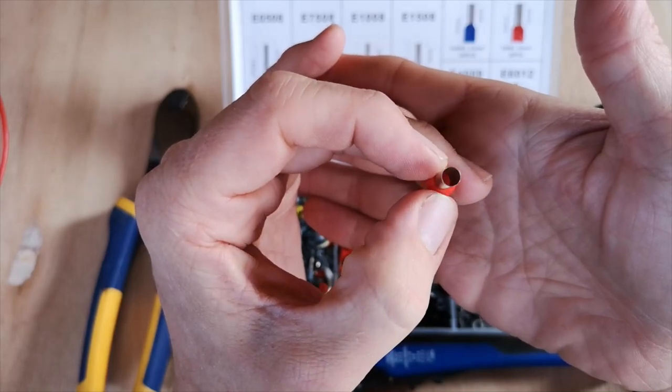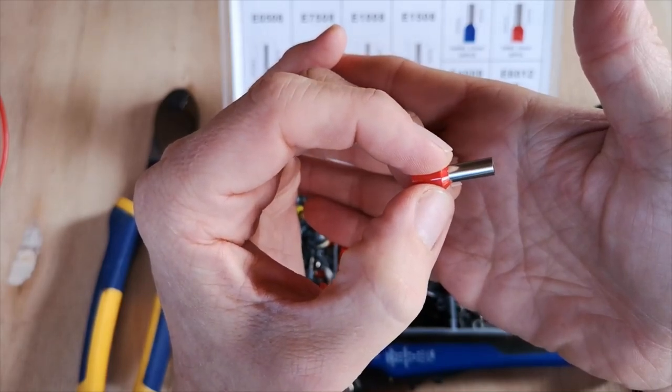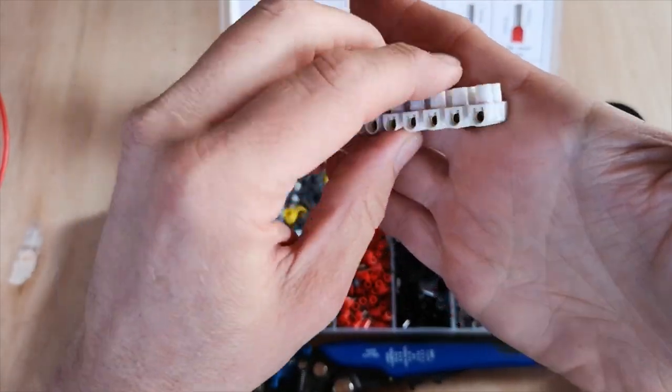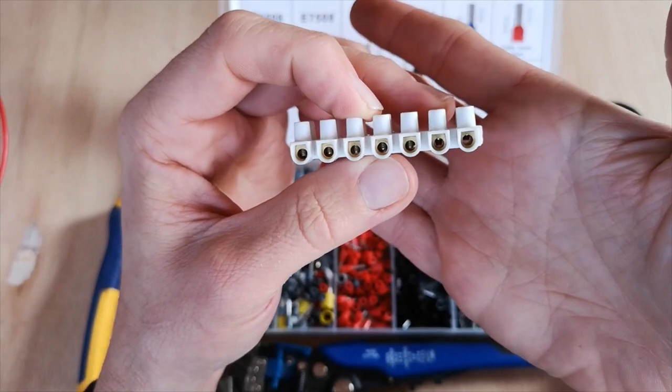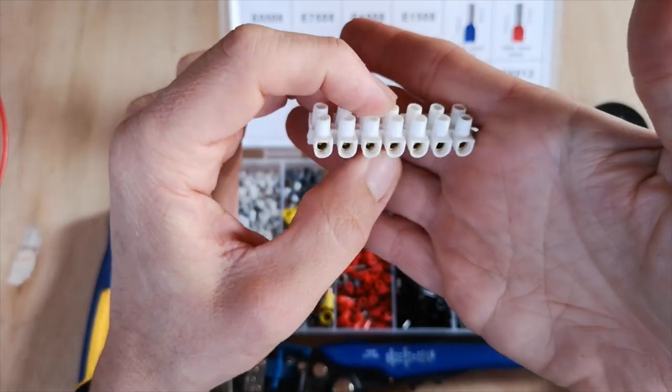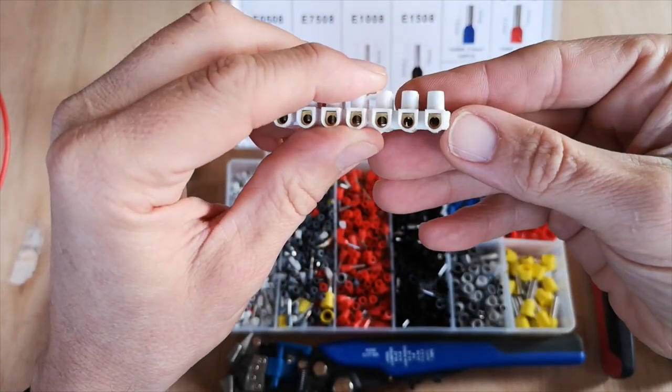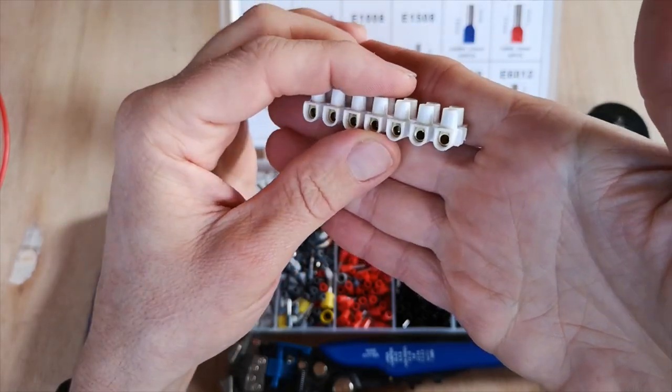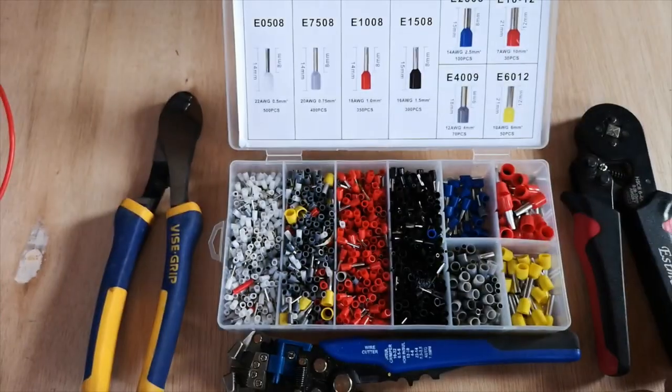The ferrules come in various sizes to suit the cable. In this example we're going to use chop block just for a visual reference. We don't use chop block in our conversions, but for this purpose and demonstration we are using chop block with the screw down terminal connections.